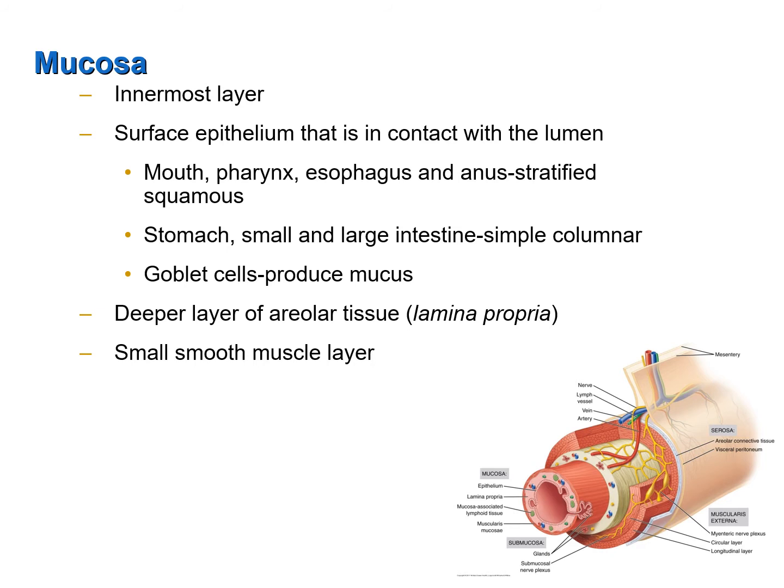The surface epithelia are in contact with the lumen. The cells of the surface epithelium in the mouth, pharynx, and esophagus, as well as the anus, are stratified squamous cells. In the stomach, small, and large intestine, the cells are simple columnar. There are also numerous goblet cells — specialized cells which produce mucus — to lubricate the GI tract for ease of movement of substances and also for protection of the GI tract.